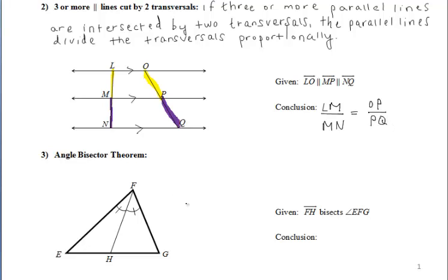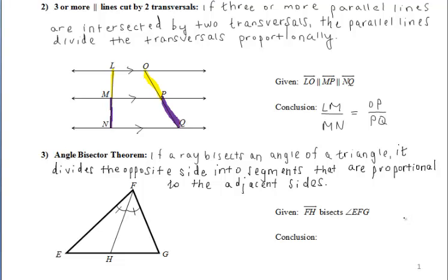Last but not least, we have the angle bisector theorem, which states that if a ray bisects an angle of a triangle, it divides the opposite side into segments proportional to the adjacent sides. If we see this in a diagram, we can say that the ratio of segment EH to HG is equal to the ratio of sides EF to FG. That bisecting ray divides the opposite side into two segments proportional to the adjacent sides, so EH to HG equals EF to FG.